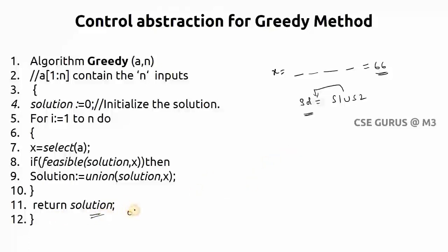Whatever is written this will be optimal solution. Like this general method is there. This is about general method of greedy solutions.